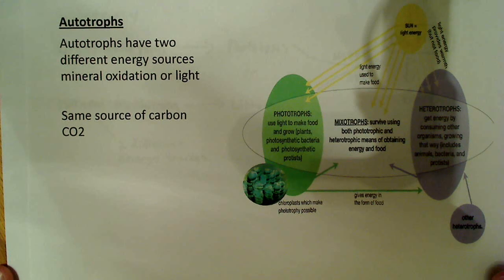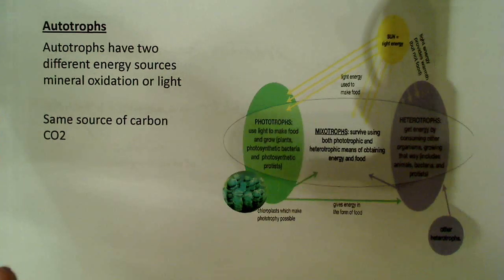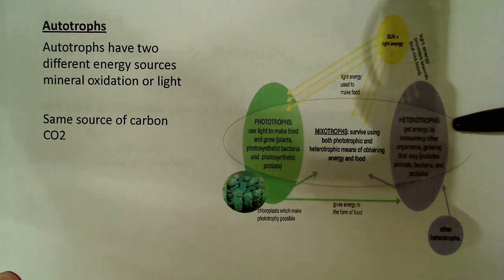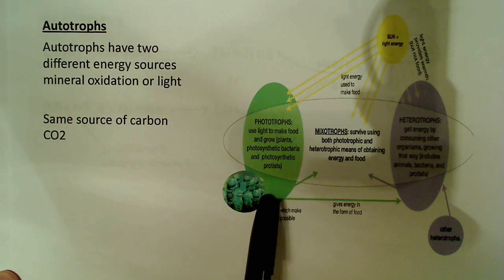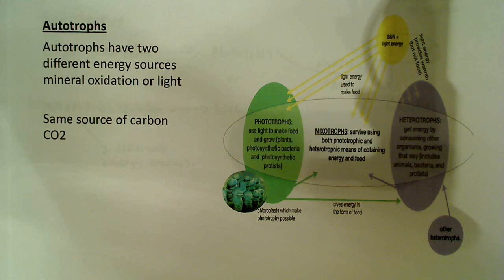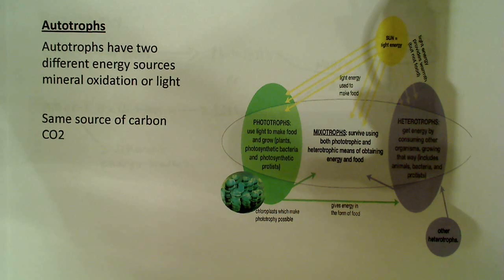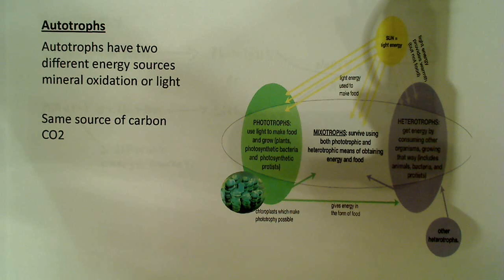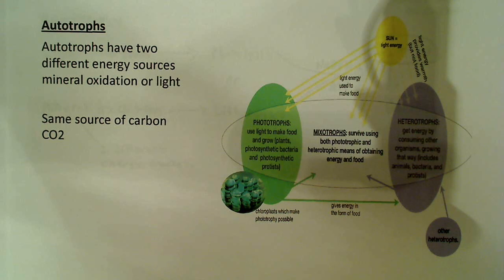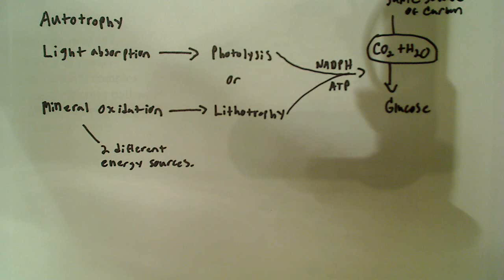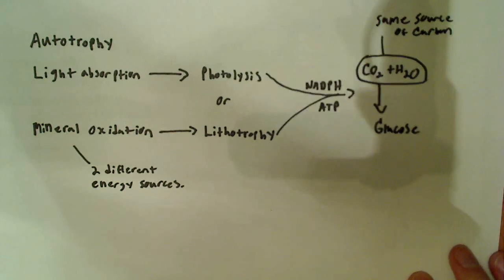In this slide, I'm talking specifically about autotrophs, and I want to show the comparison between heterotrophs and how they gain their energy, and also phototrophs. Autotrophs have two different energy sources: mineral oxidation or light. If I'm talking about mineral oxidation, I'm talking about chemoautotrophs — using some inorganic molecule, breaking it down, and using the energy to fix carbon. If I'm talking about photoautotrophy, I'm talking about light. But the key point is that both use the same carbon source: CO2.